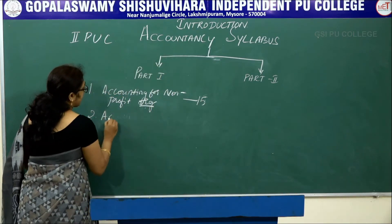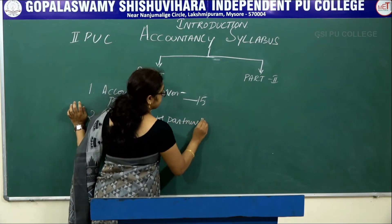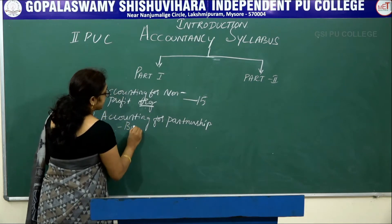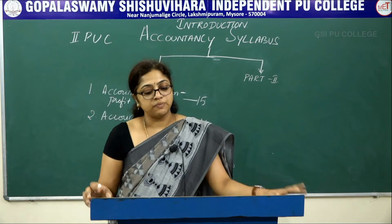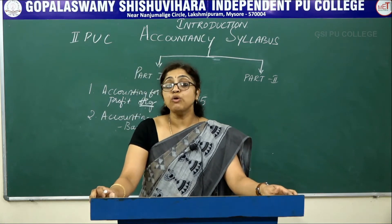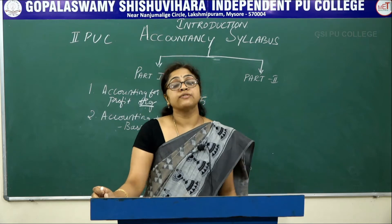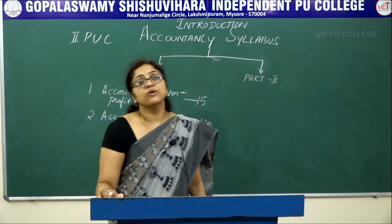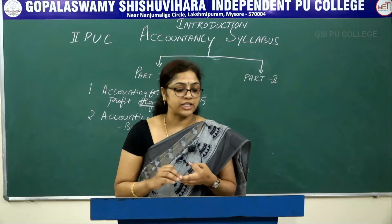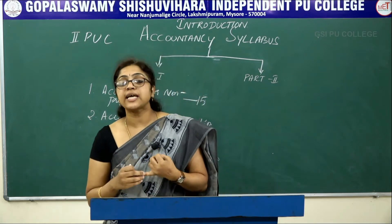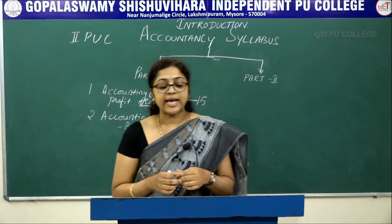The second chapter is Accounting for Partnership. You will learn the basic concepts of partnership. Partnership means the relationship between two or more persons to share the profits of a business carried on by all or any one of them acting for all. In this chapter you learn about the nature of partnership, partnership deed, special aspects of partnership accounts, fixed capital and fluctuating capital, and distribution of profit among the partners, as well as the guarantee of profits to a partner.